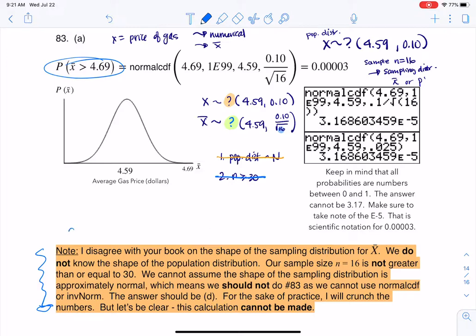Now, your book, if you look at the back of the book, if you look at the key, they say the answer is A, and that's where I disagree with it. I think the answer is unknown because the calculation can't be made.